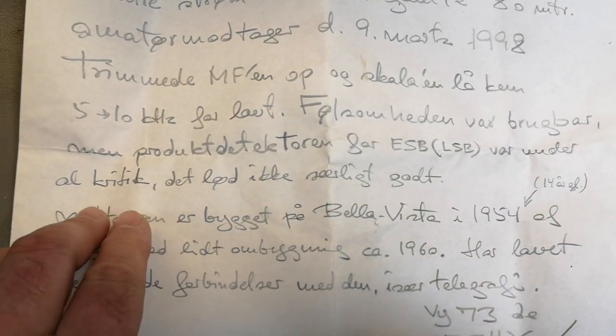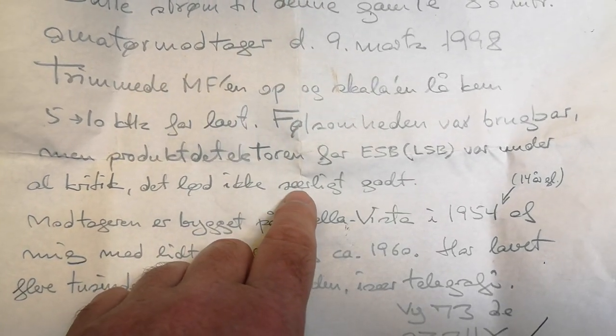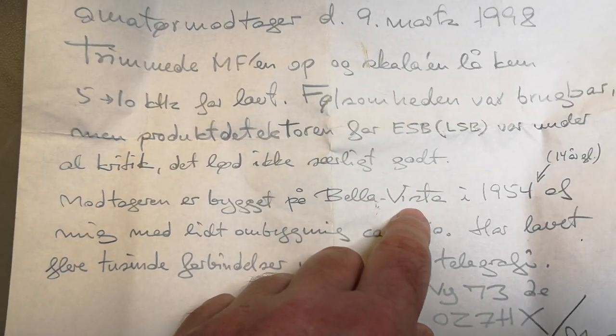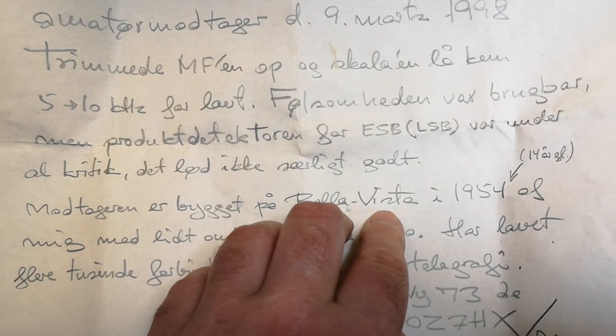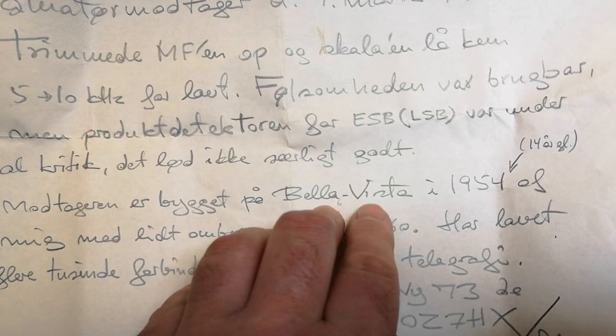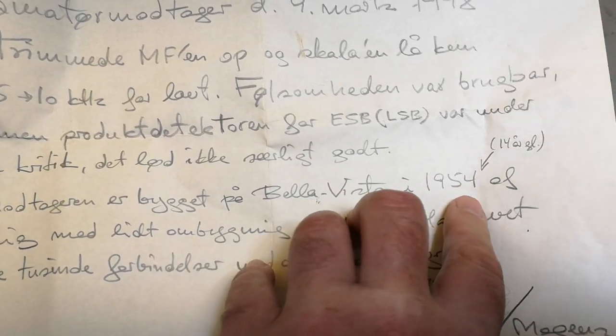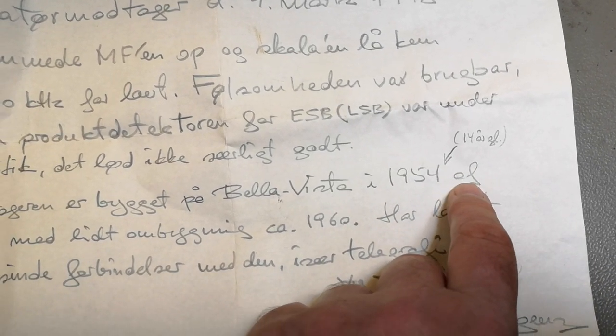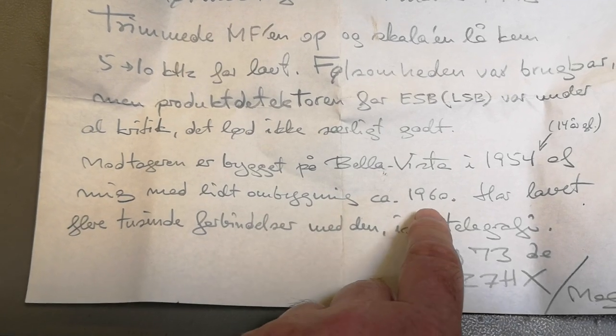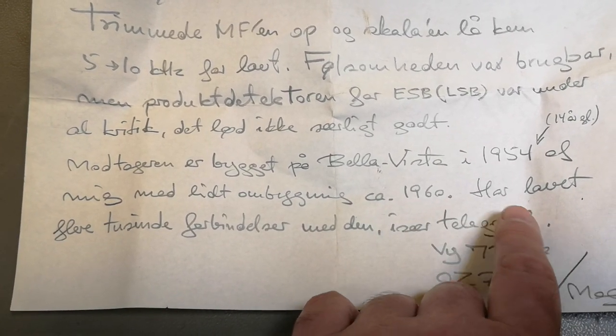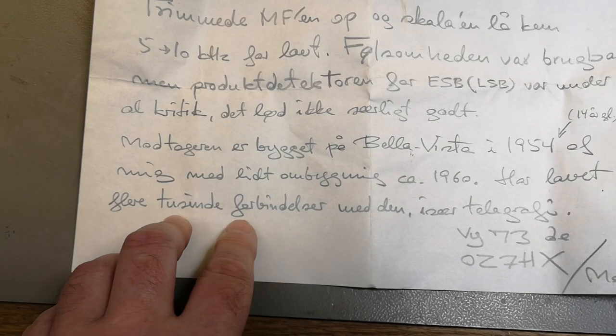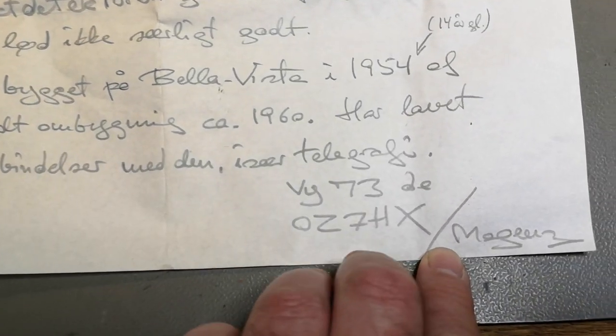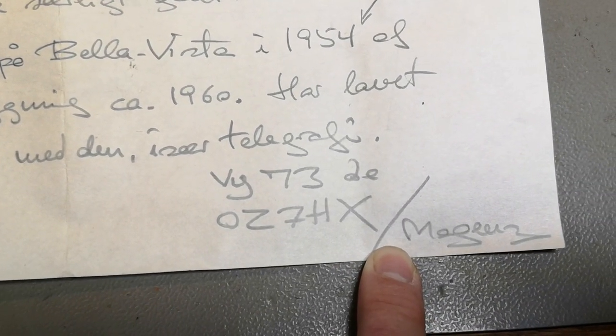The sound quality was really bad. The receiver is built on Bella Vista in 1954 at 14 years old by me, and it was rebuilt in 1960. He made more than thousands of connections with this, especially on Morse code. And here is his very 73s.